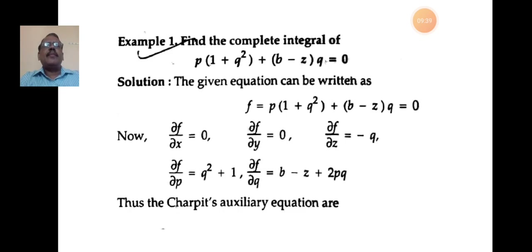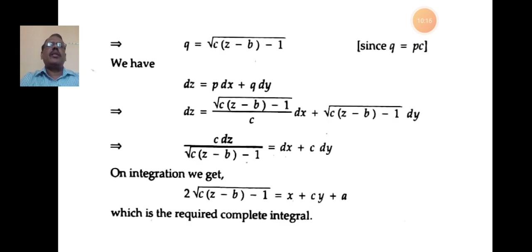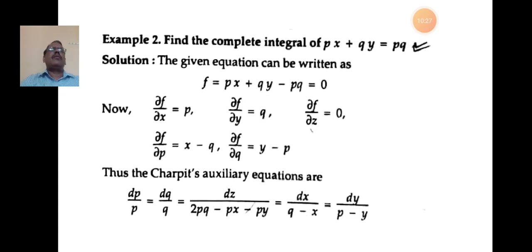The major steps are: differentiate the given equation with respect to x, y, z, p, and q. Here, since it does not contain x and y, those derivatives are zero. The other derivatives are −q, q²+1, and b−z+2pq. Write the auxiliary equation, take the first two ratios to get q = pc, substitute into the given equation to get p, then substitute p and q into dz = p dx + q dy. After integration, 2√(c(z−b)−1) = x + cy + a.